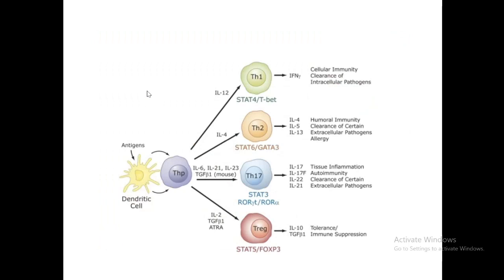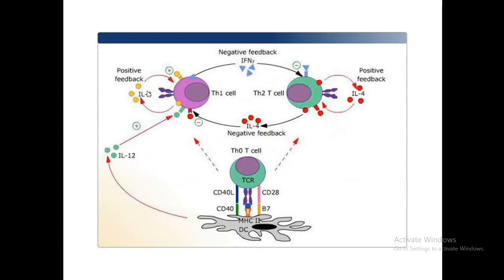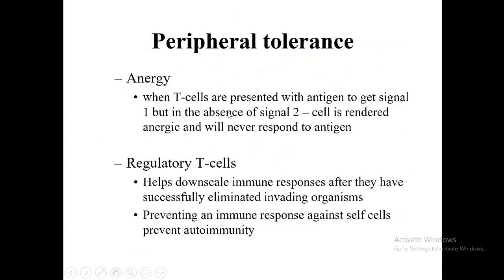In any given immune response, it doesn't involve all naive T cells differentiating into one type. In a viral response, you'll have a Th1-predominant response; in a bacterial infection, a Th2-predominant response. There will be small components of other subtypes, but one will predominate. The proportion of Th1 or Th2 cells produced is controlled by this negative feedback process between the cytokines they produce.